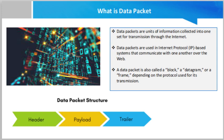A data packet is also called a block, a datagram, or a frame, depending on the protocol used for its transmission. To better understand what a data packet is, think of an image that you would like to send to a friend via iMessage. The image would be divided into smaller pieces before it gets sent, which happens in the background. Your friend sees only the reassembled image afterward.